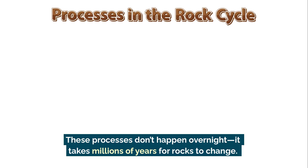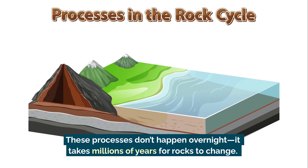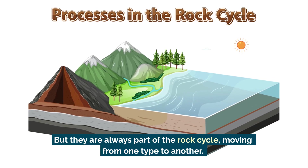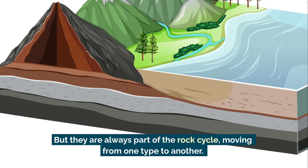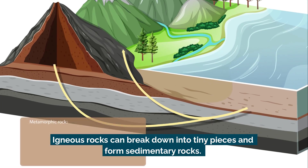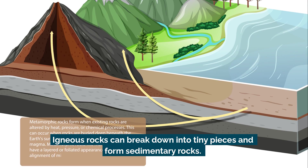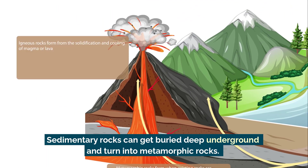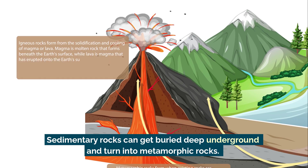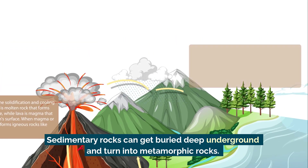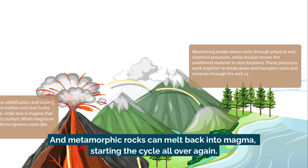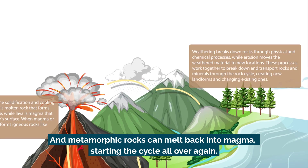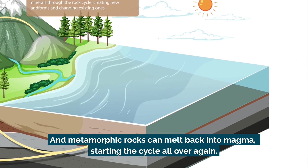These processes don't happen overnight — it takes millions of years for rocks to change. But they're always part of the rock cycle, moving from one type to another. Igneous rocks can break down into tiny pieces and form sedimentary rocks. Sedimentary rocks can get buried deep underground and turn into metamorphic rocks. And metamorphic rocks can melt back into magma, starting the cycle all over again.